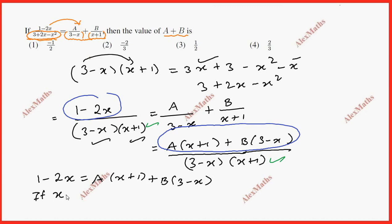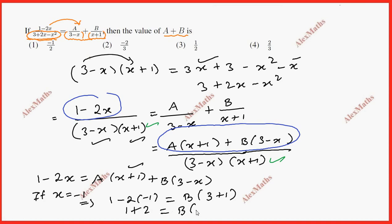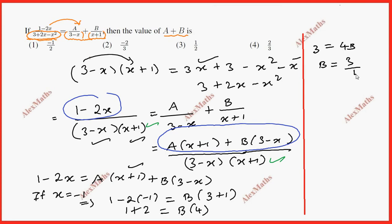If x equals minus 1: 1 minus 2 times minus 1 equals 0 plus B into (3 minus of minus 1). So 1 plus 2 equals B into 4. Total 3 equals 4b, so b equals 3 by 4.